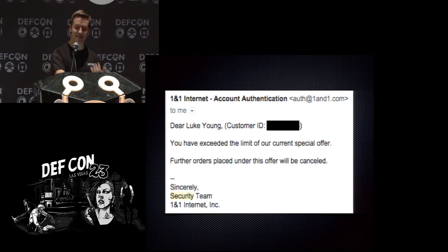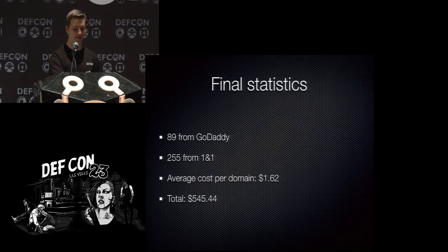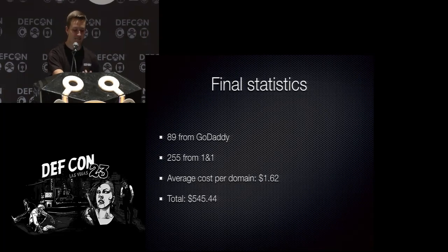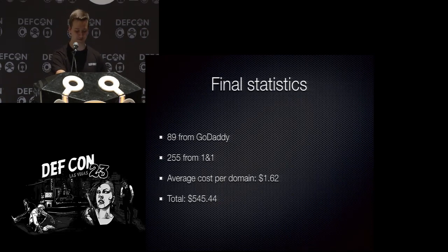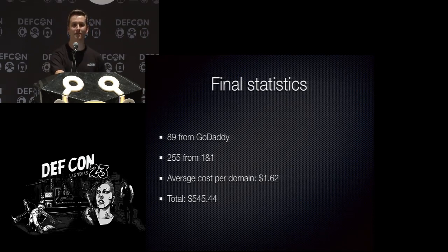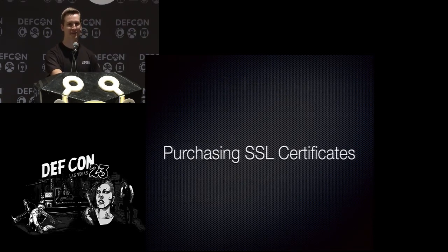The final statistics: I bought 89 domains from GoDaddy and 255 from 1&1, at an average cost of $1.62 per domain, coming to a total of $545. The next thing I realized was I was missing a lot of data because most traffic was coming in over SSL — so I decided to buy SSL certificates too.